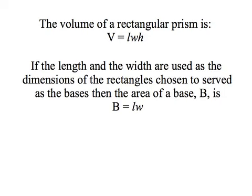Previously, the base referred to one of the sides of a triangle or a parallelogram, and when we measured a base, we measured its length — the variable used for that kind of base is lowercase b. For this kind of base, we use a capital B because this base represents one of the faces of a prism, and when we measure this type of base, we measure it using area. So for a rectangular prism, the base is a rectangle, and its area is the length times the width.